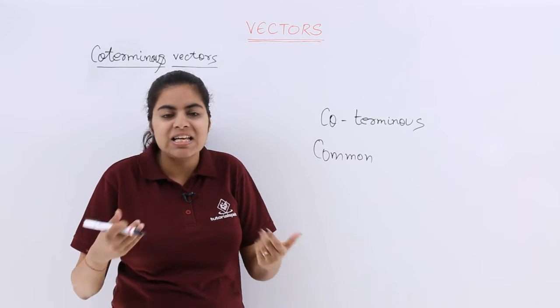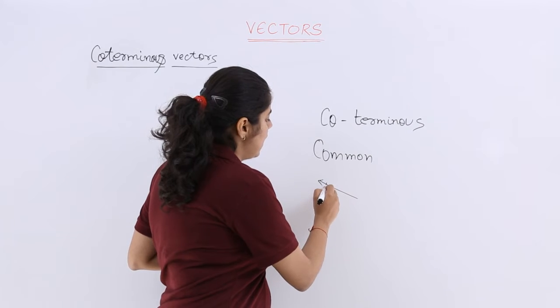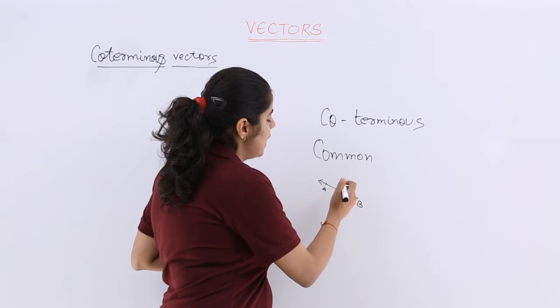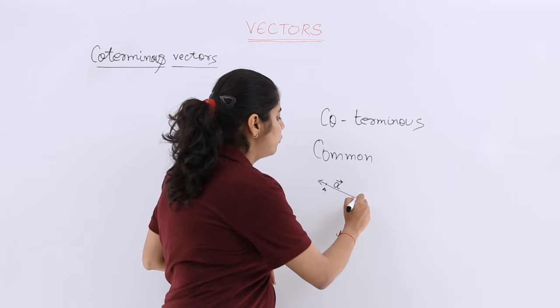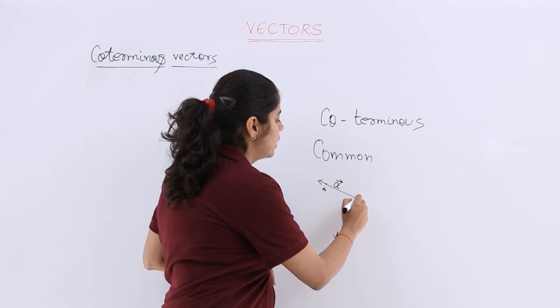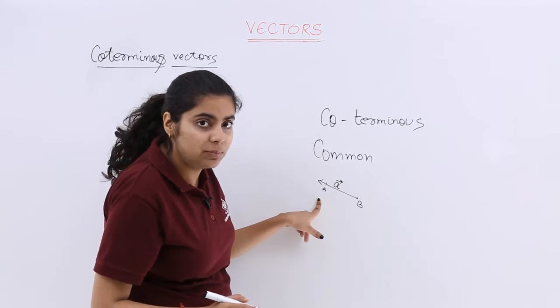So simple, right? So let me draw the diagram. If I have a vector, here is the A point, here is the B point, and this vector is named as small a vector. And if there is a vector wherein I say that this is the initial point, this is the terminal point.